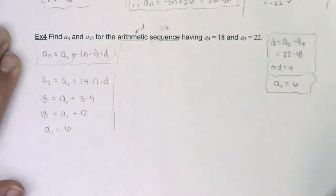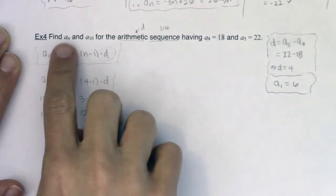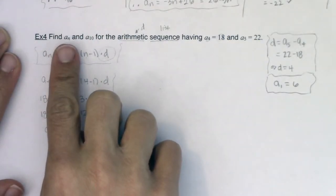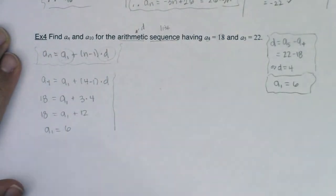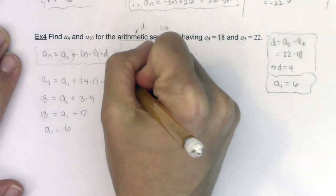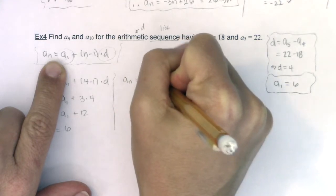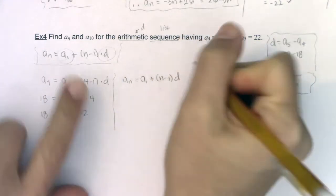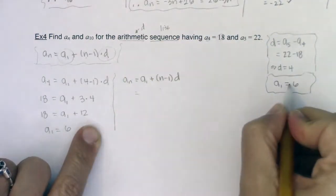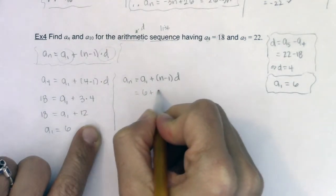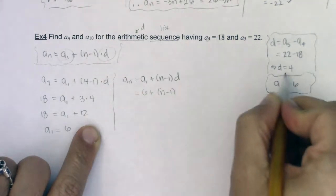Alright, so here we go. Now I haven't even found a_n yet. So let's answer this question and then I will do a_10. So if I want a_n, I'm going to rewrite this formula again just so we can see it get plugged in. a_n equals a_1 plus n minus 1 times d. Now we know a_1. We know it's 6. I'm going to leave n as is and I know d is 4.